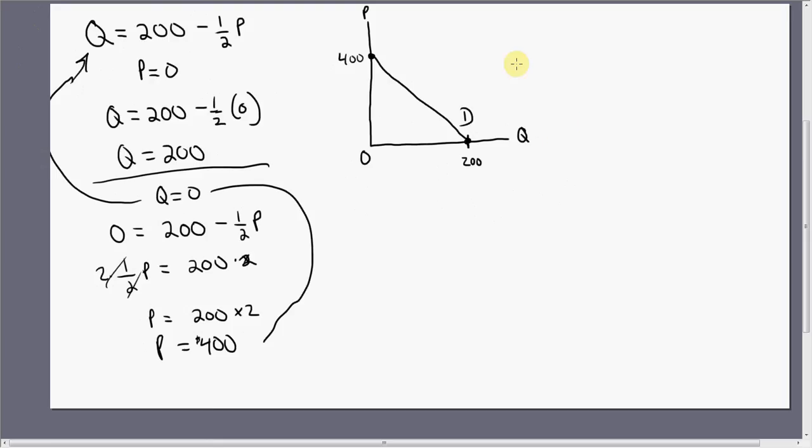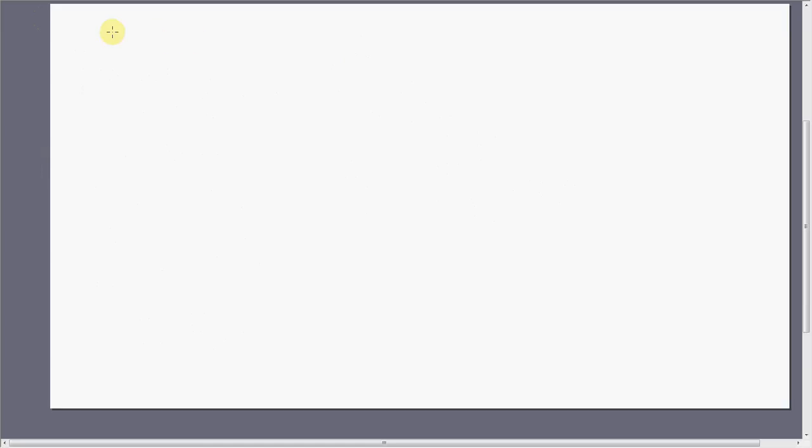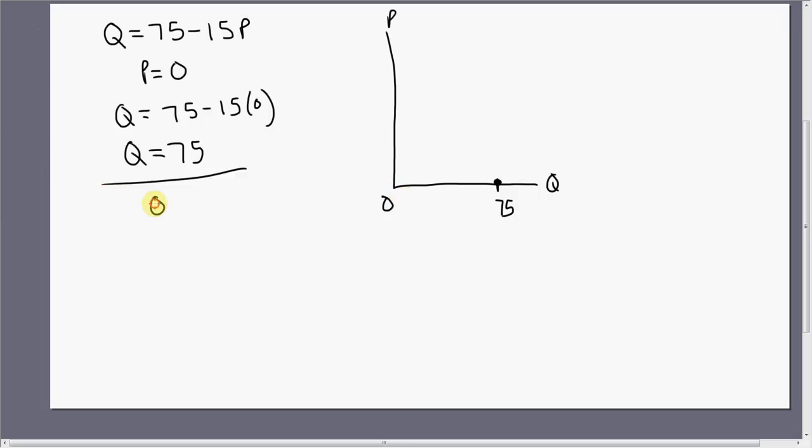Let's do another example. Let's say Q equals 75 minus 15P. Let's graph this equation. Starting with P equals 0, Q equals 75. Here's where Q is 75 and P is 0.